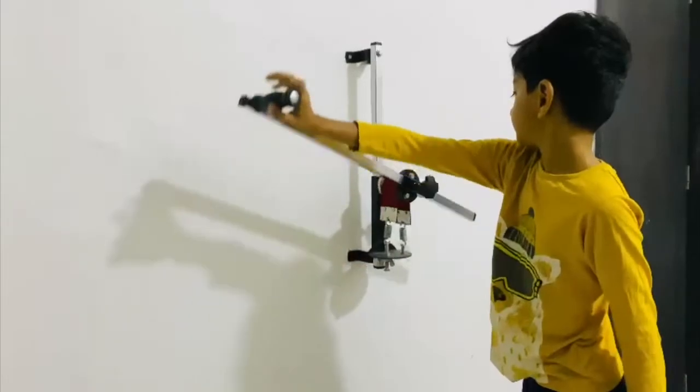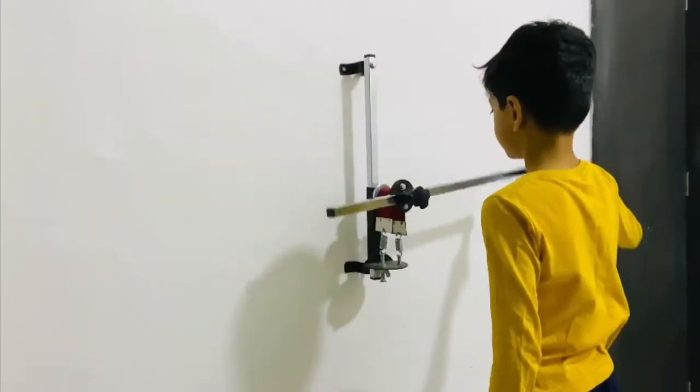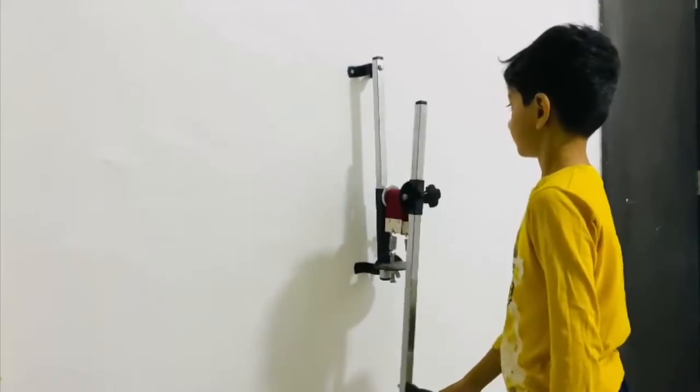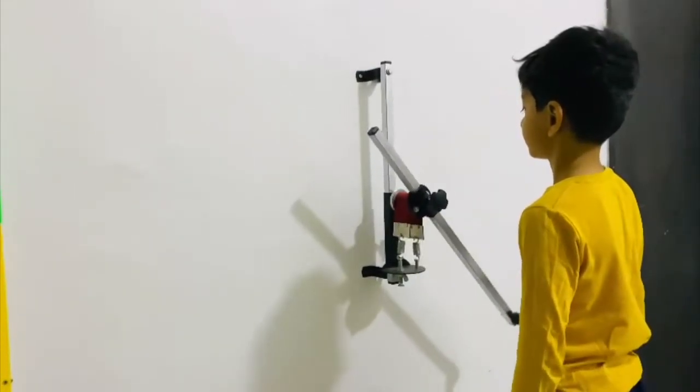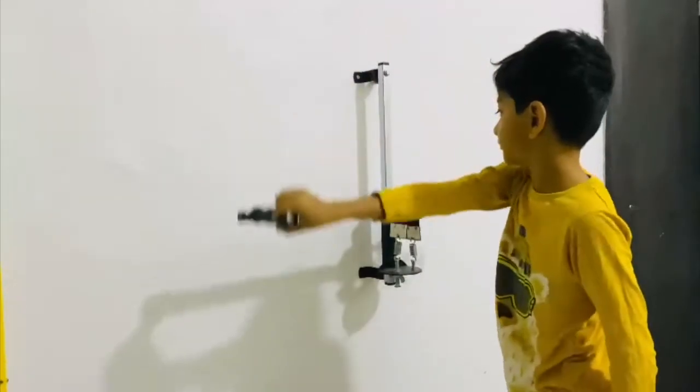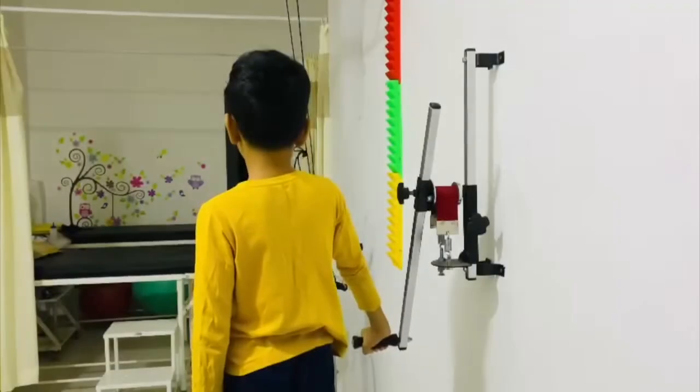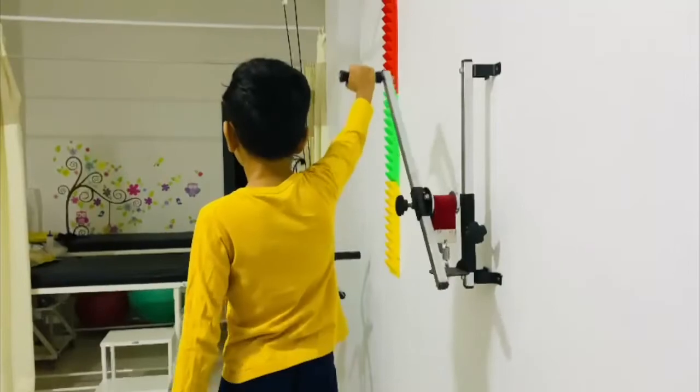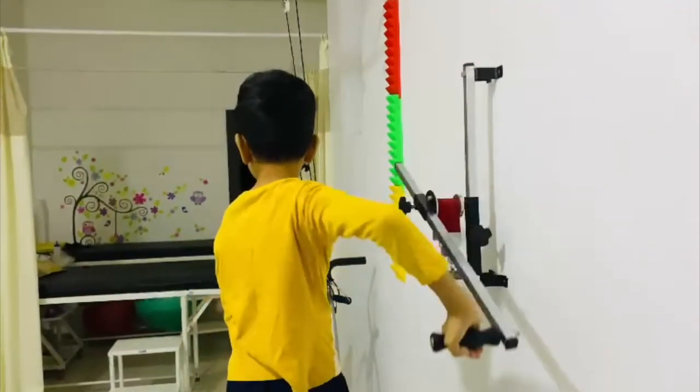Grab the handle and move the shoulder wheel or shoulder bar in clockwise and anticlockwise directions, 15 times each. In another method, the patient can stand with the painful shoulder facing toward the shoulder wheel.